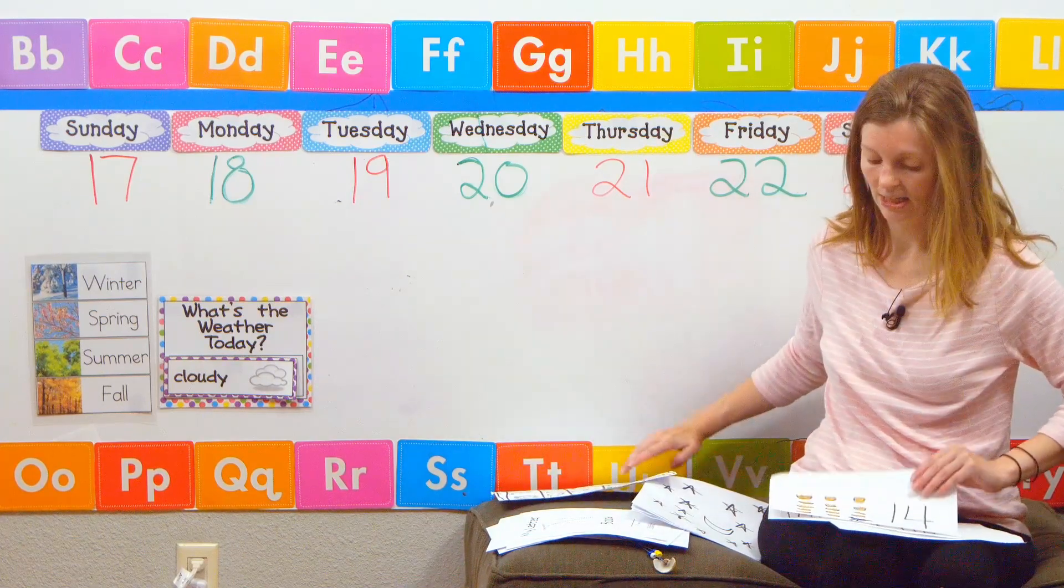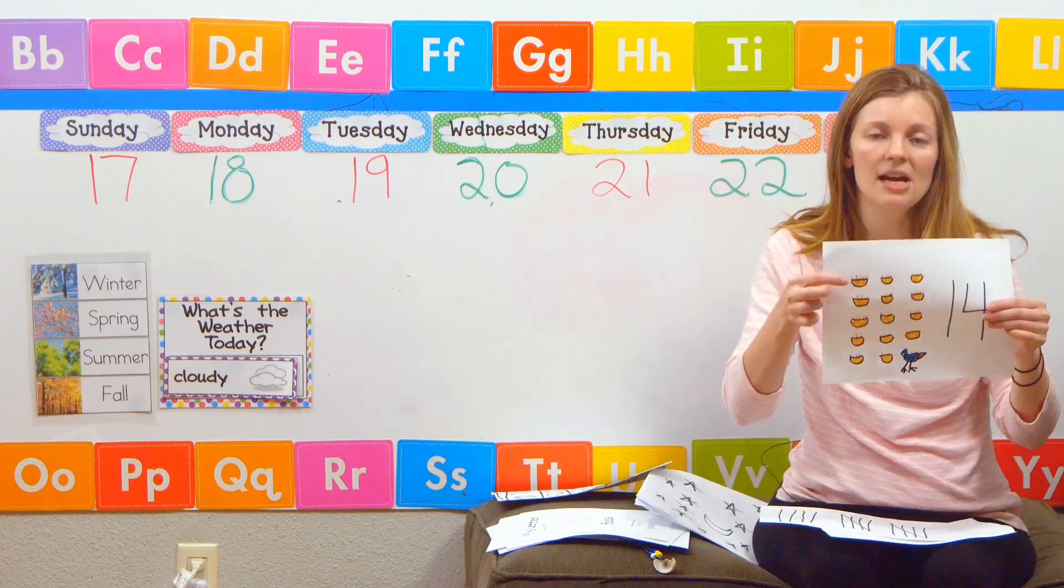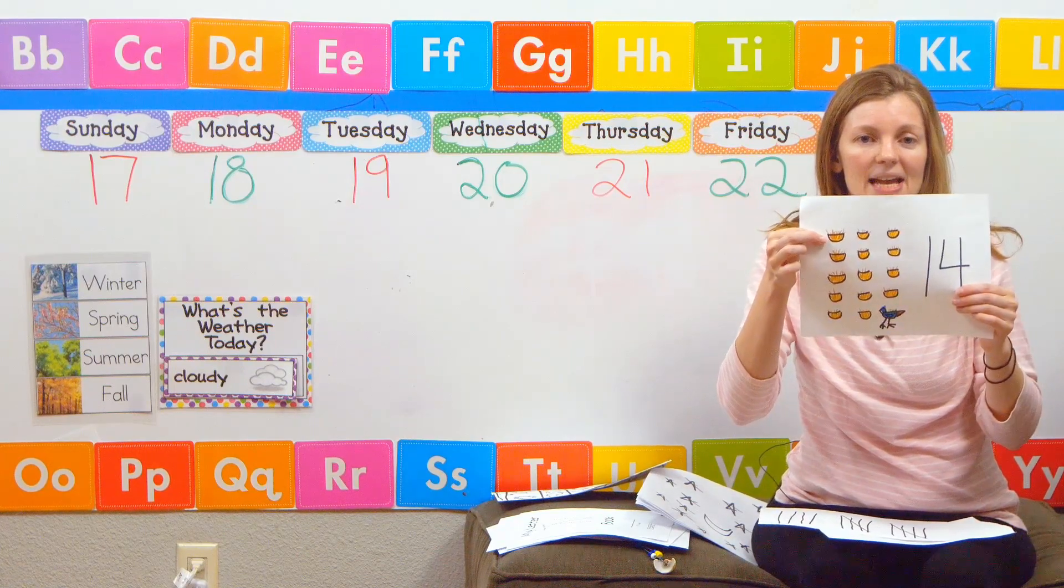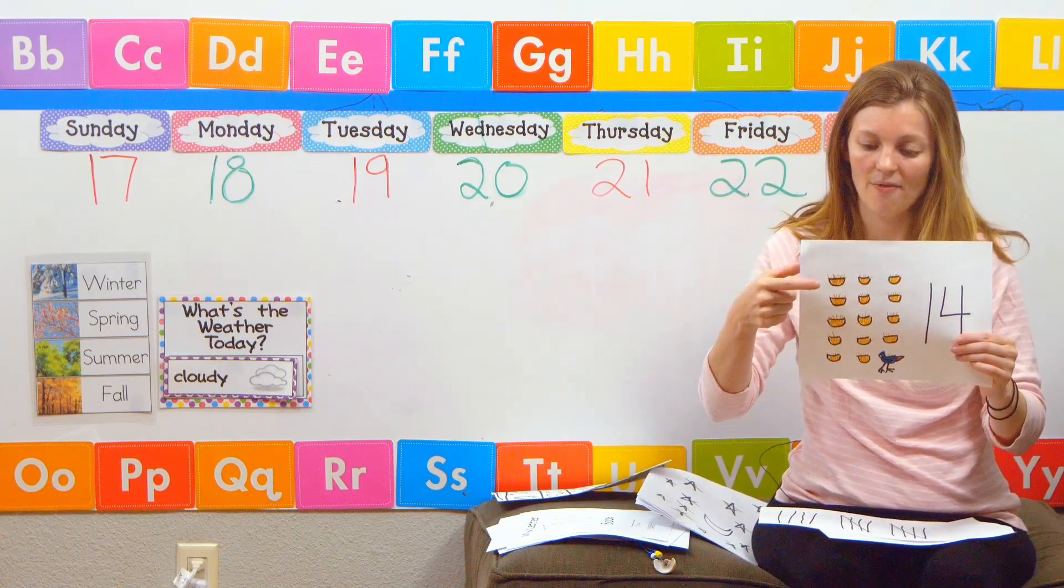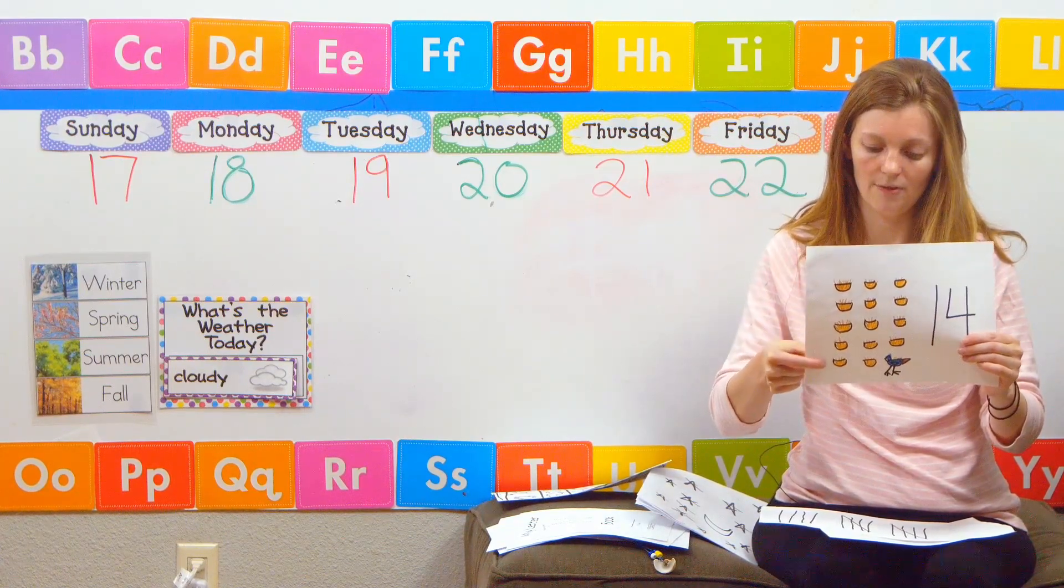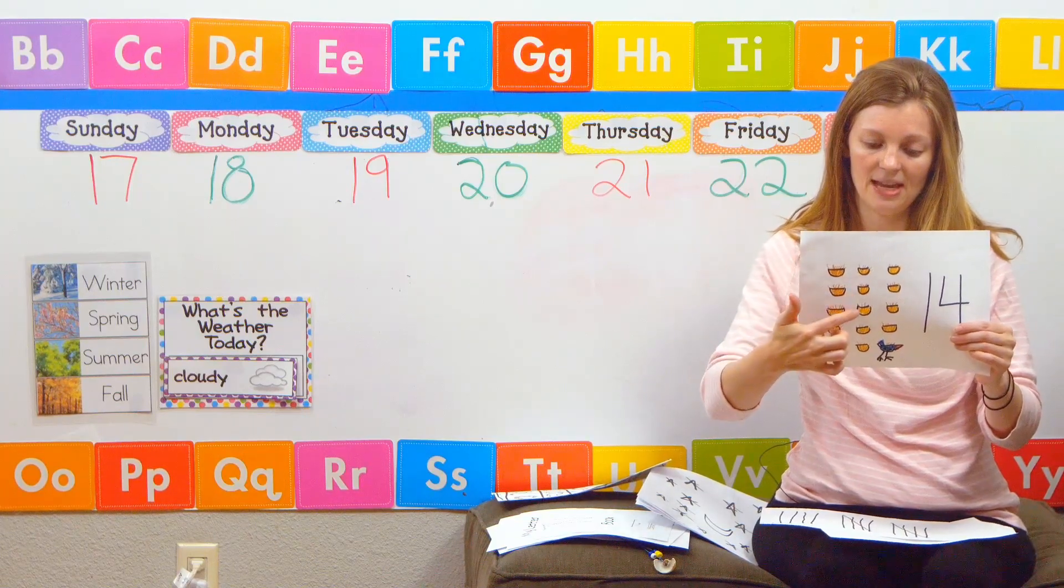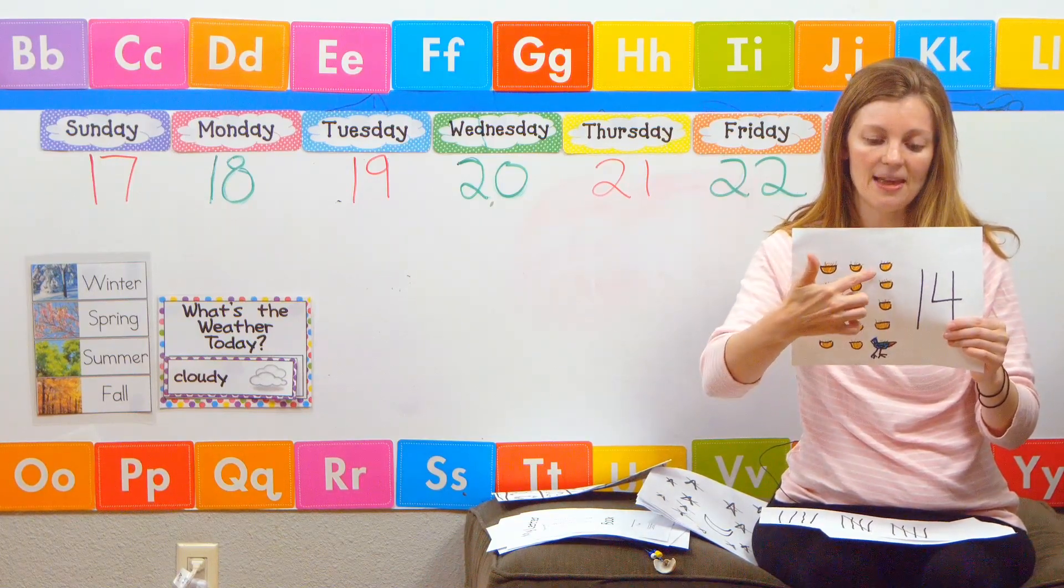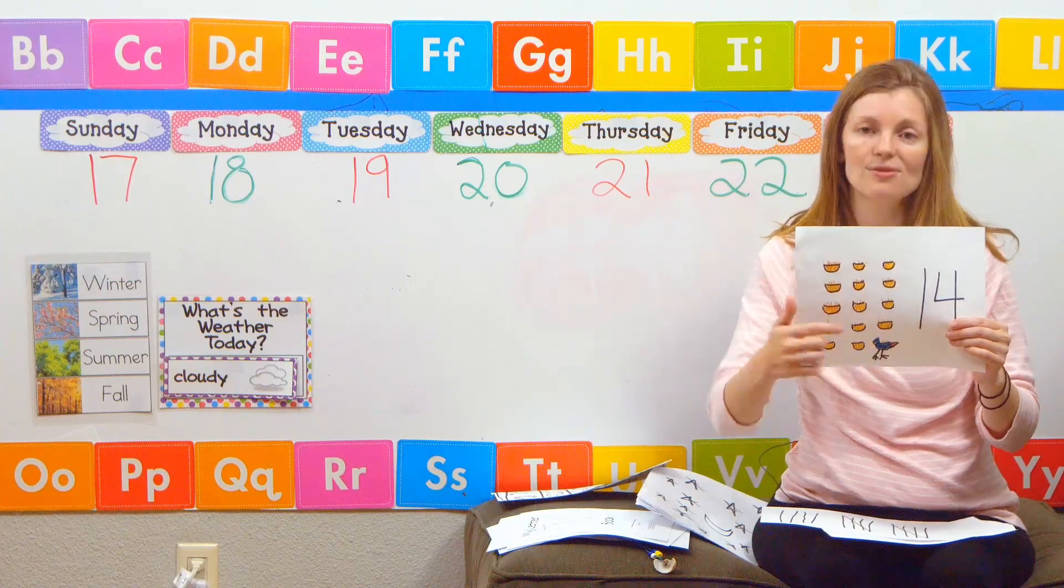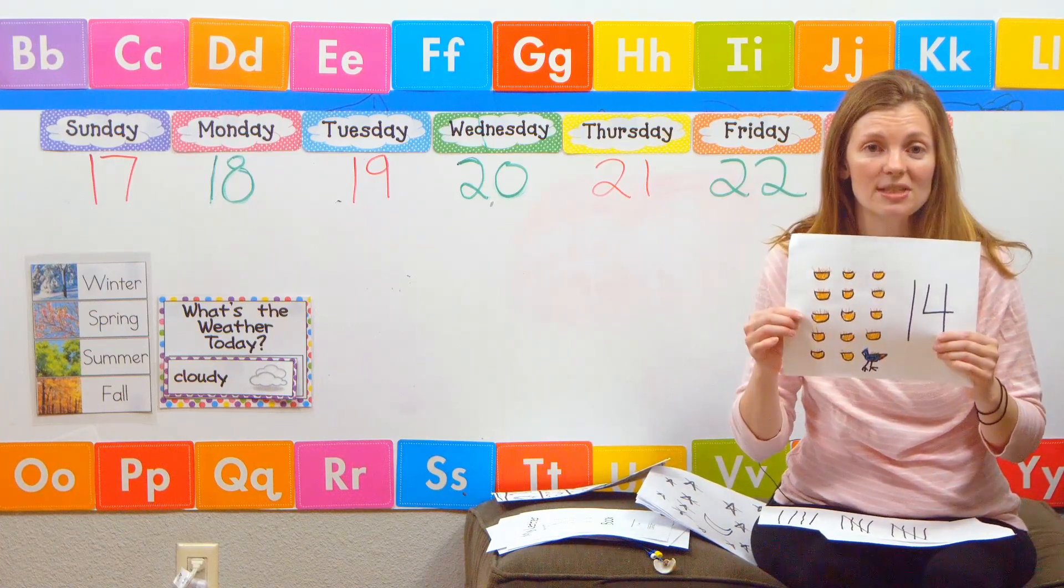Another way to do 14 is by counting objects. So I drew some little na na nests. So I have 1, 2, 3, 4, 5, 6, 7, 8, 9, 10, 11, 12, 13, and 14. So I have 14 little nests.